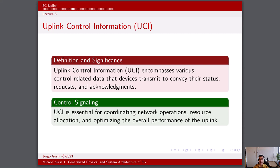Uplink control information, or UCI, stands as a cornerstone of efficient and coordinated communication within the 5G ecosystem. UCI encompasses a range of control-related data that user devices transmit to the network, conveying their status, requests, acknowledgements, and other essential control signaling. UCI plays a pivotal role in coordinating network operations, optimizing resource allocation, and ensuring effective uplink communication. By conveying their requirements through UCI, devices enable the network to allocate resources optimally, minimizing delays and maximizing throughput. UCI allows the network to adapt its strategies based on real-time channel conditions, user demands, and congestion levels, and aids in managing interference by enabling devices to adjust their power levels.